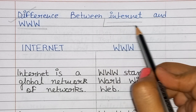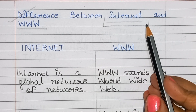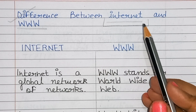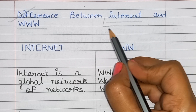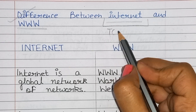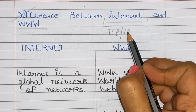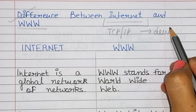What is internet? Internet is a global system of interconnecting computer networks that use TCP/IP protocol to link devices worldwide.